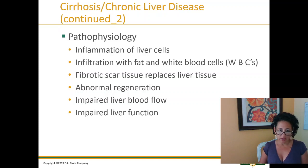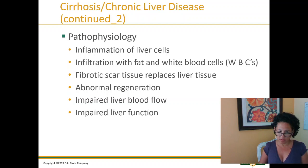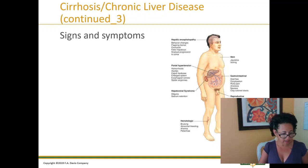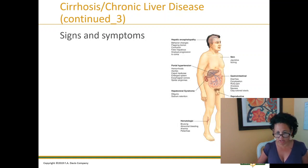Pathophysiology of cirrhosis: inflammation of liver cells, infiltration with fat and white blood cells, fibrotic scar tissue replaces liver tissue, impaired liver blood flow, and impaired liver function. Liver function tests (LFTs) are serum blood tests that will be checked. On page 702, there is a diagram showing signs and symptoms — a very good illustration.